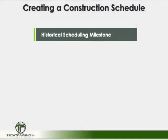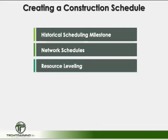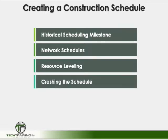This scheduling introduction will be presented in four parts. First, we'll review some historical milestones in scheduling. Next, we are going to create the network schedule, which will include the forward pass and backward pass, as well as free float, total float, and lag time. Then we will review resource leveling, and we will finish by crashing the schedule — a common process used when project times need to be accelerated.